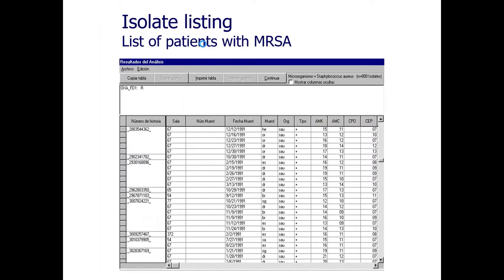The first analysis at the top of the screen is called isolate listing and summary. The list is simply a list. In this example, the organism is Staph aureus — there were 880 isolates and I requested the ones that were oxacillin-resistant, so these are MRSA isolates. You can see many isolates from the same patient. One patient with number starting 3007824221 had MRSA six times — in room 77 on October 21st, then moved to room 67, with specimens including drain, bronchial, and sputum samples.